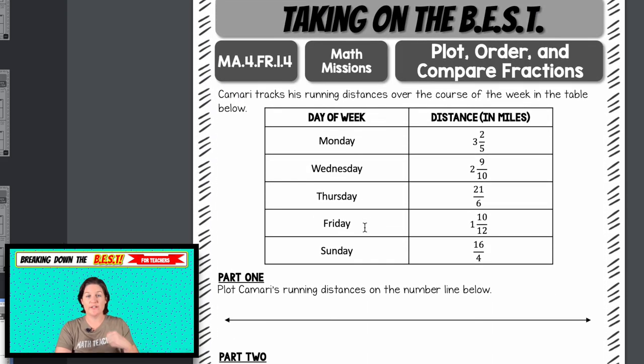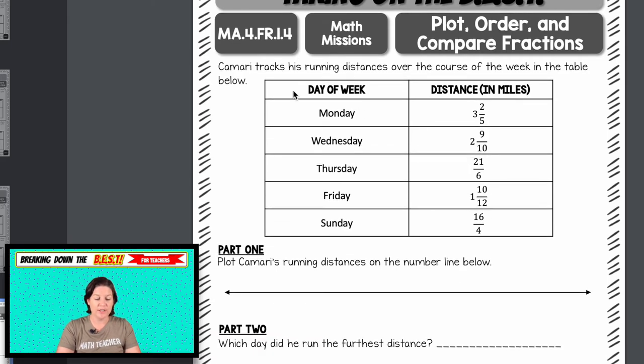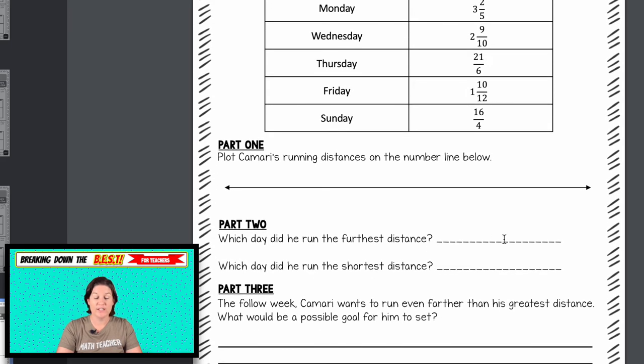Then we have two more activities. So we have the math mission. That's this right here, plotting, ordering, and comparing fractions. This says Kamari tracks his running distances over the course of the week in the table below. Plot Kamari's running distances on the lines below. So taking all of these and then plotting them. Which day did he run the furthest distance? Which day did he run the shortest distance? So we're seeing the standard in action, providing more responsibility for the student, and increasing the level of thinking.